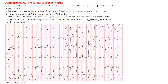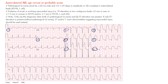To localize an anterolateral MI, remember that the lateral limb leads are lead I and aVL. The anterolateral leads in the precordial leads can be V2, V3, V4, V5, and V6. Sometimes we consider the septal leads V1 and V2, but you may have involvement of almost all precordial leads if it's a large infarct — this involves the left ventricle.